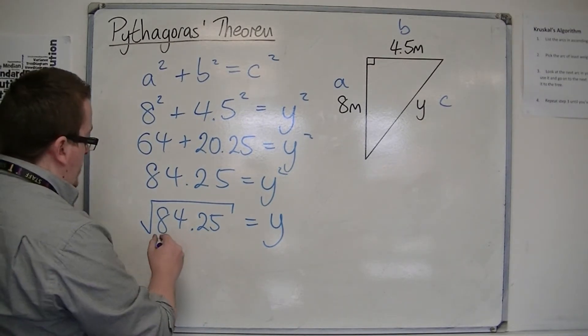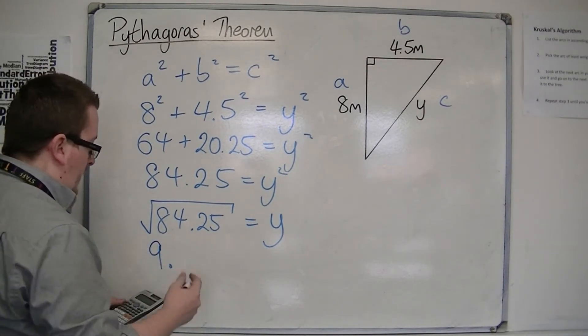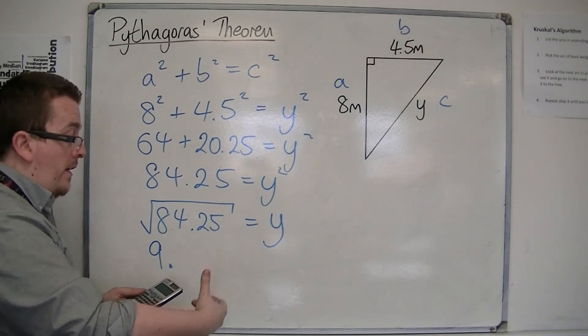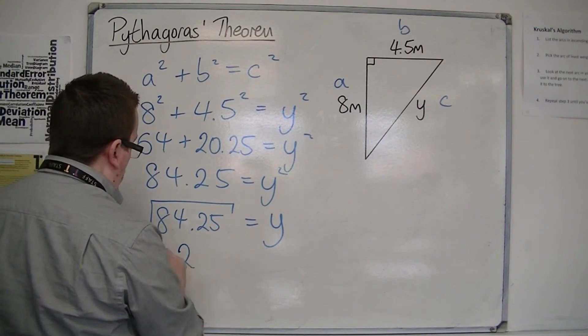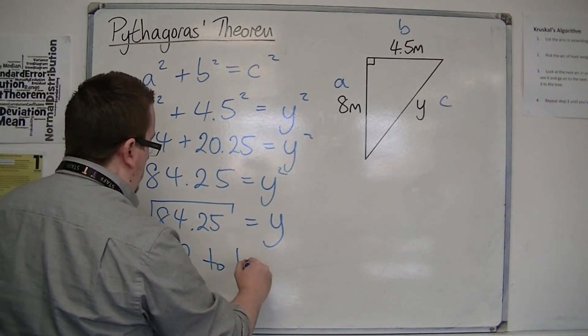You should get 9.178779875, so 9.2 to 1 decimal place.